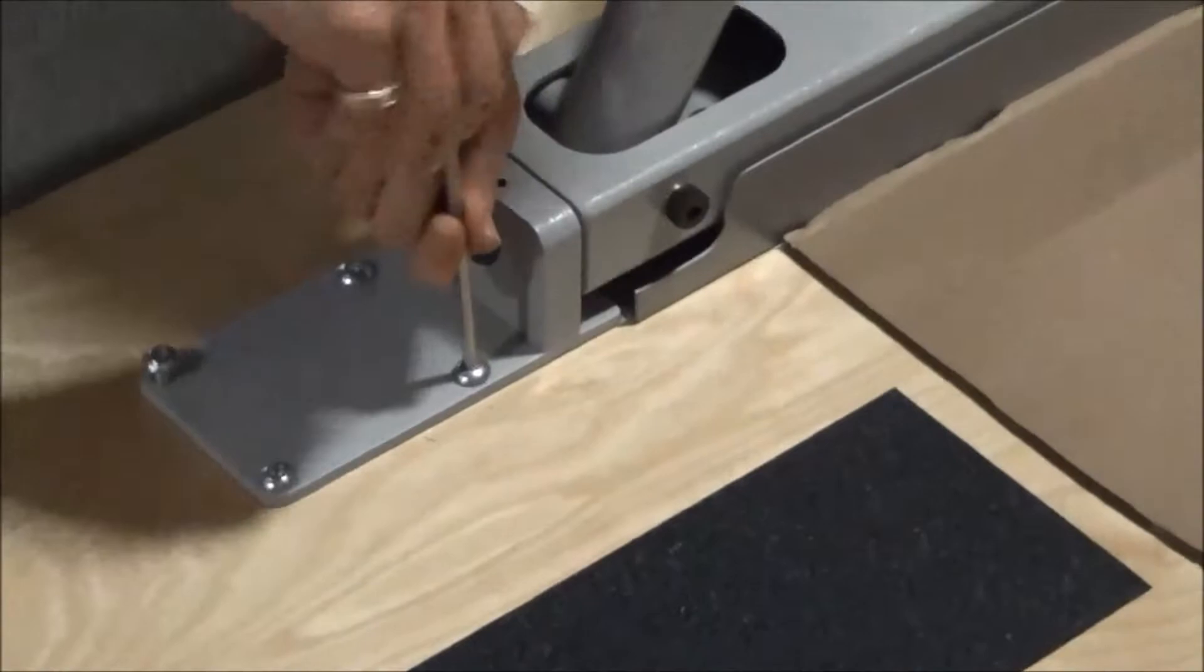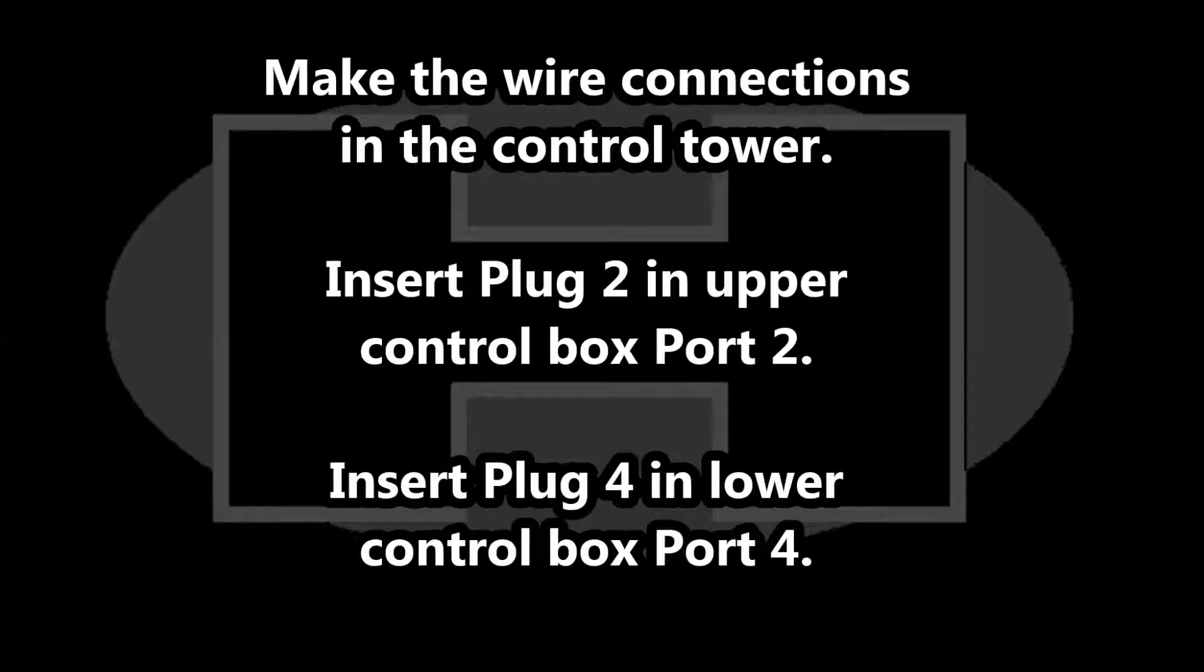Make the wire connections in the control tower. Insert plug 2 in the upper control box, port number 2. Insert plug 4 in the lower control box, port 4. Make sure the plugs are pressed all the way in.